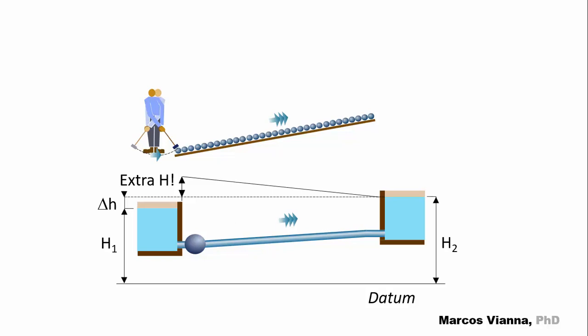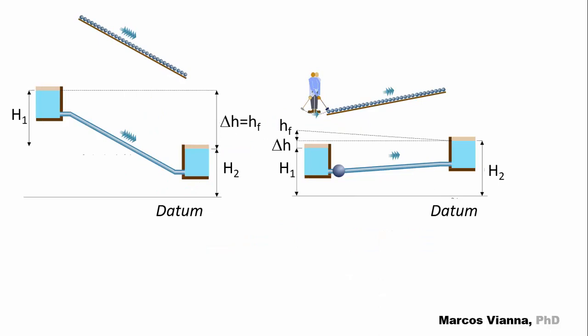We must overcome the height difference delta H plus this extra H. In short, these are the two situations that we find in practice. At the left, the water flows by itself. At the right, we'll need a little help.